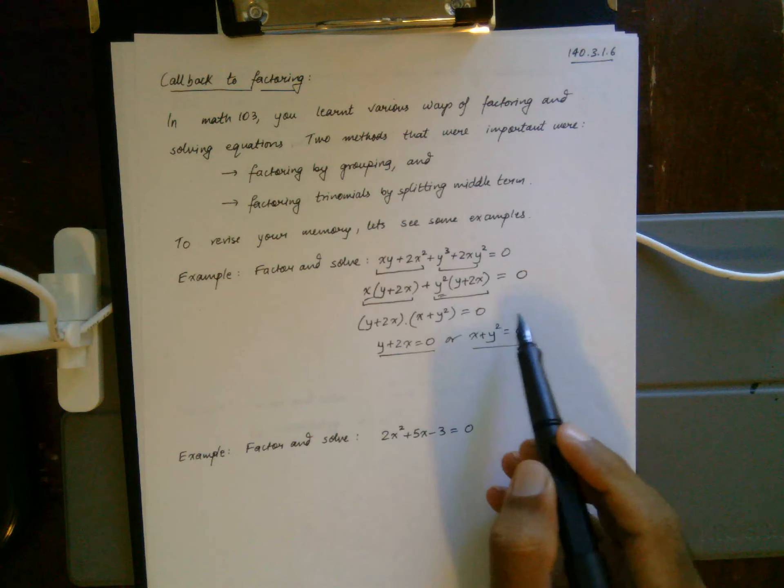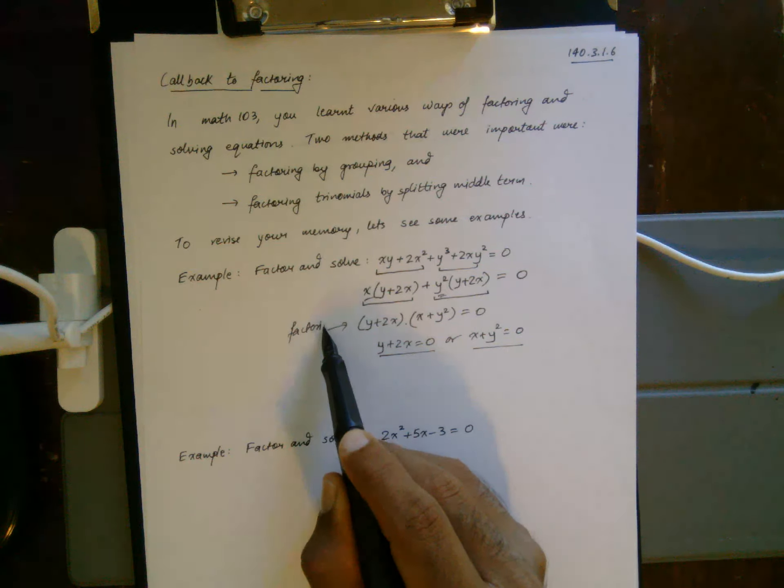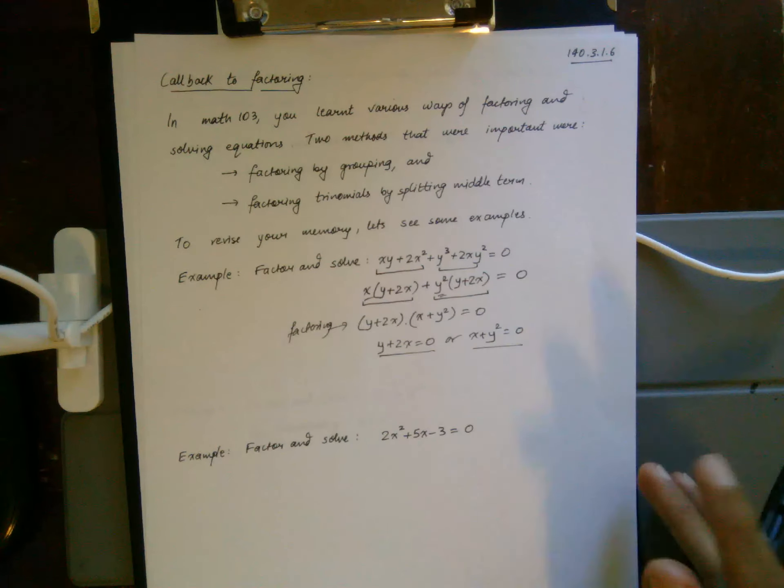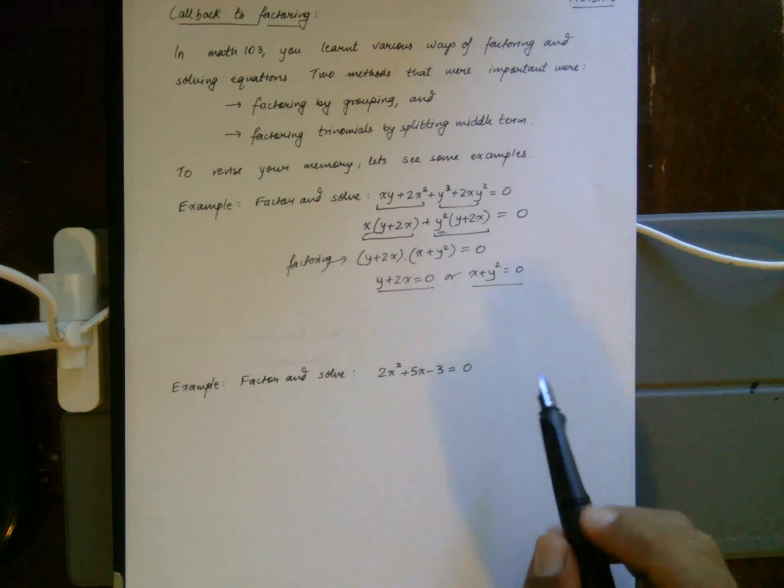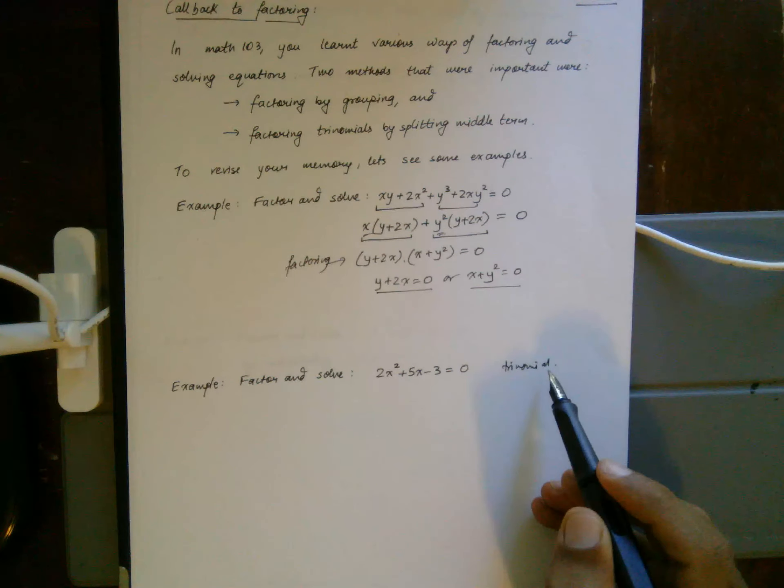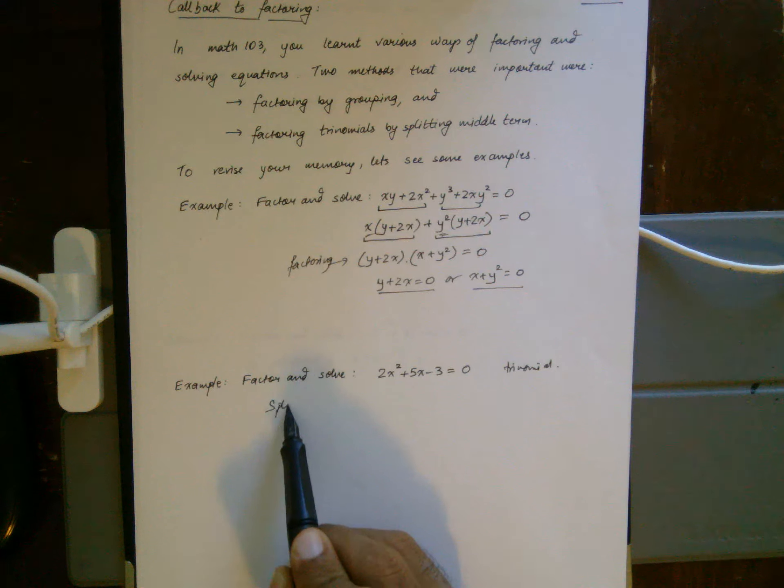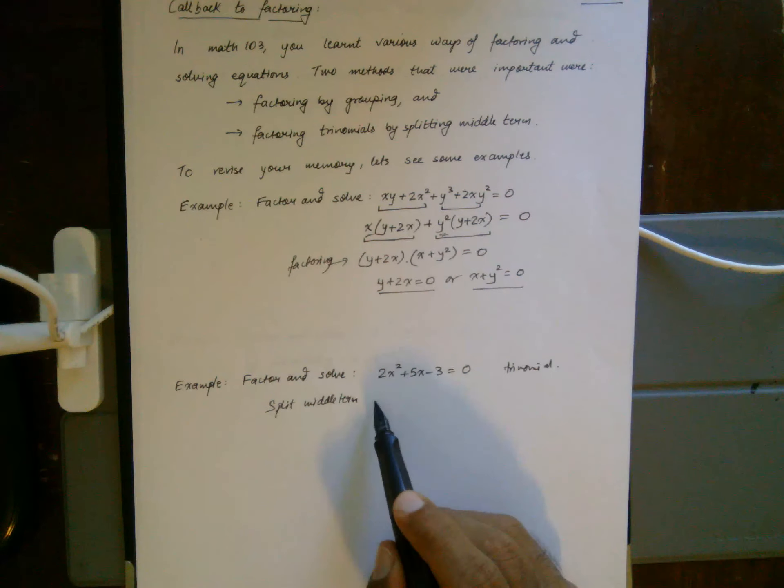That's called factoring by grouping. The second one is a trinomial. For trinomials, we have a process that we follow. We're going to split the middle term such that the product equals 2 times negative 3, and the sum equals this coefficient, which is 5.